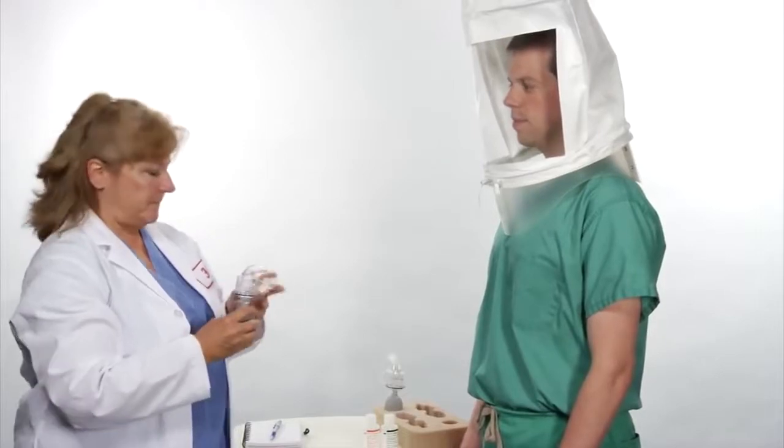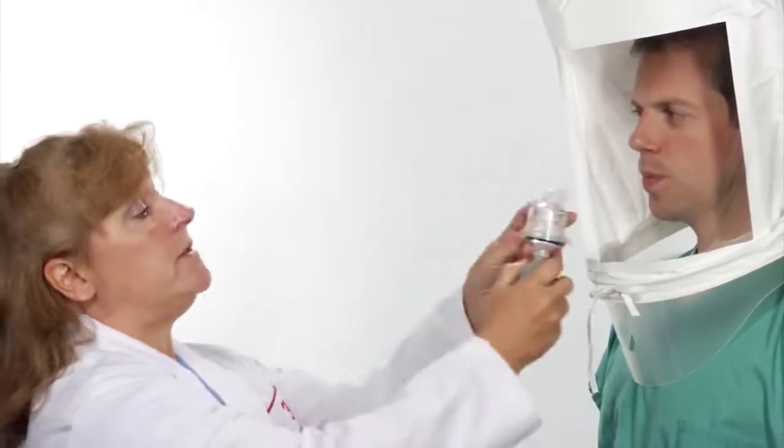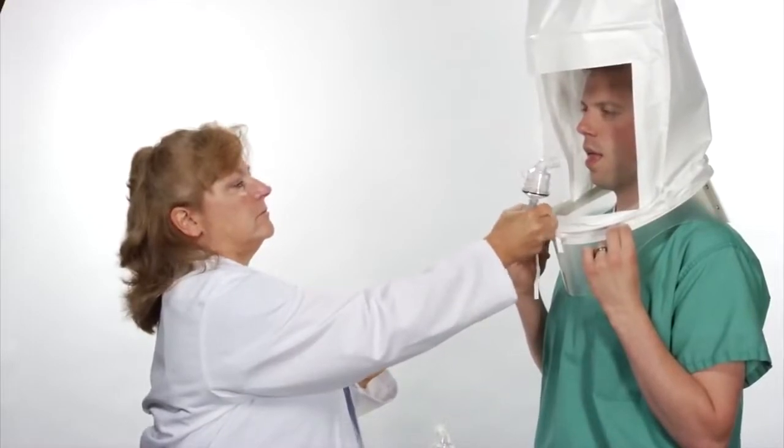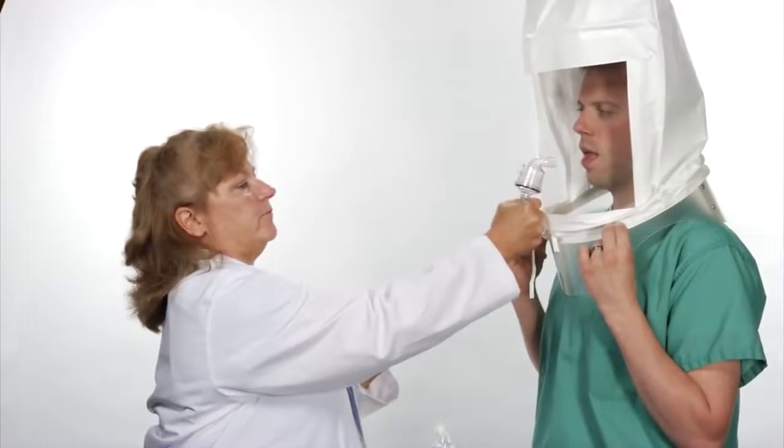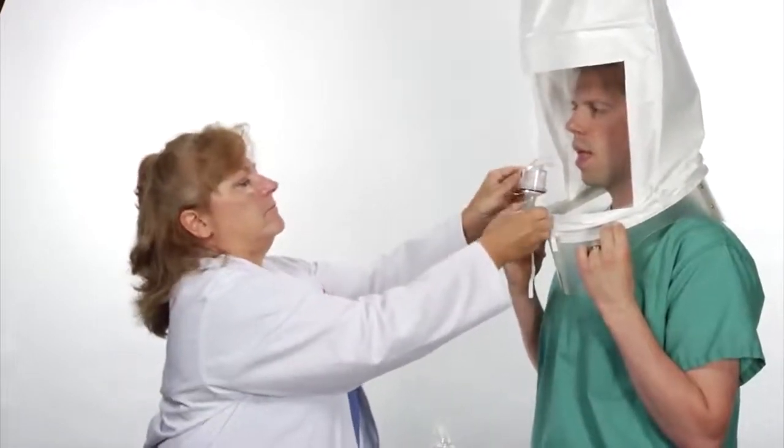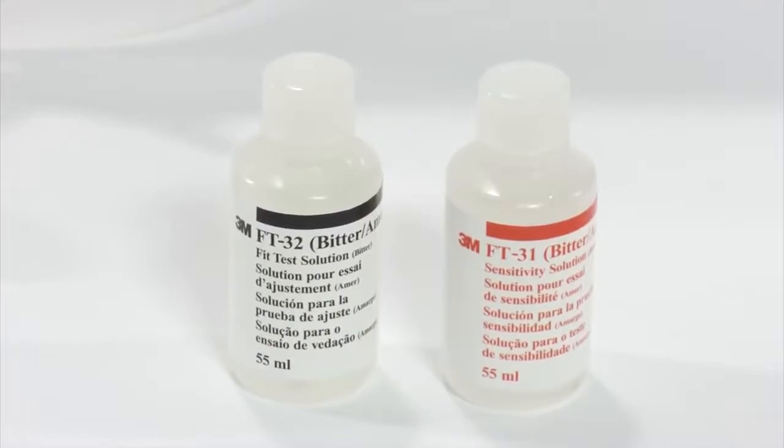Ask the test subject if they can taste the sweet taste of the solution. If the test subject can taste the solution during the 10 squeezes, note the number of squeezes as 10 and proceed to the fit test. If the test subject cannot taste the solution during the 10 squeezes, inject an additional 10 squeezes of the aerosol into the hood and see if the test subject can taste the solution at this time. Repeat with 10 additional squeezes up to a total of 30 if necessary. Note whether the test subject can taste the solution after 20 or 30 squeezes. If the test subject is unable to taste the solution after 30 squeezes, end the test. Another fit test method must be used for this test subject such as use of the FT32 bitter solution or a quantitative fit test method. Remove the test hood from the subject. Give the subject a few minutes to clear the taste from their mouth. The test subject may help clear the taste of the test solution by rinsing their mouth with water.